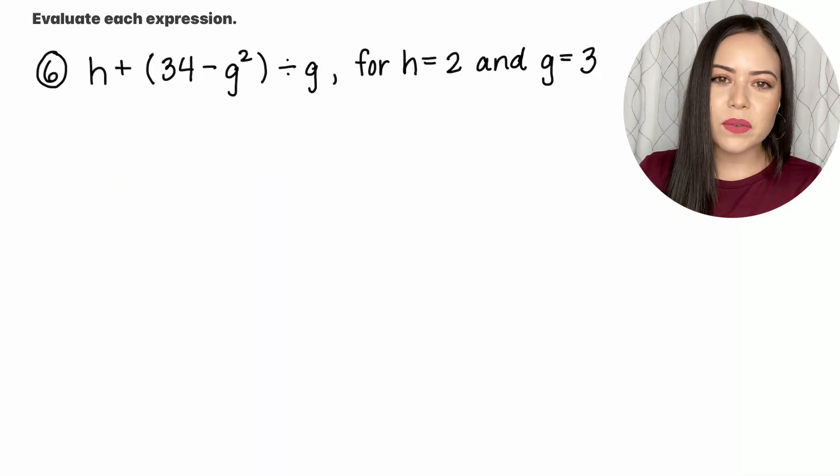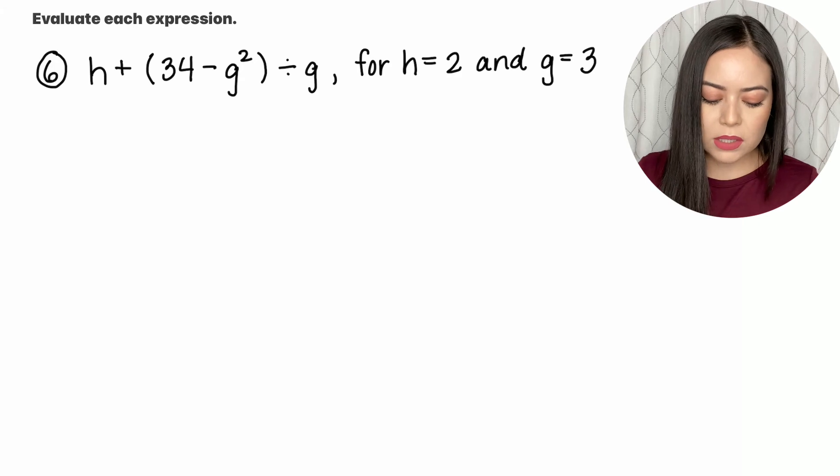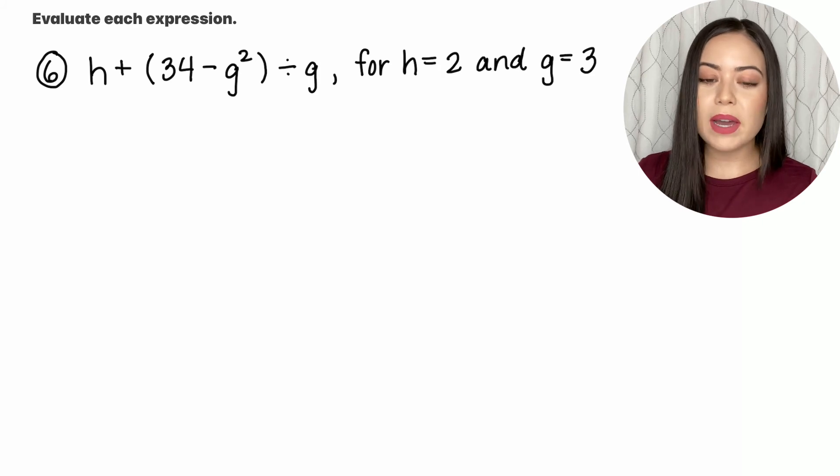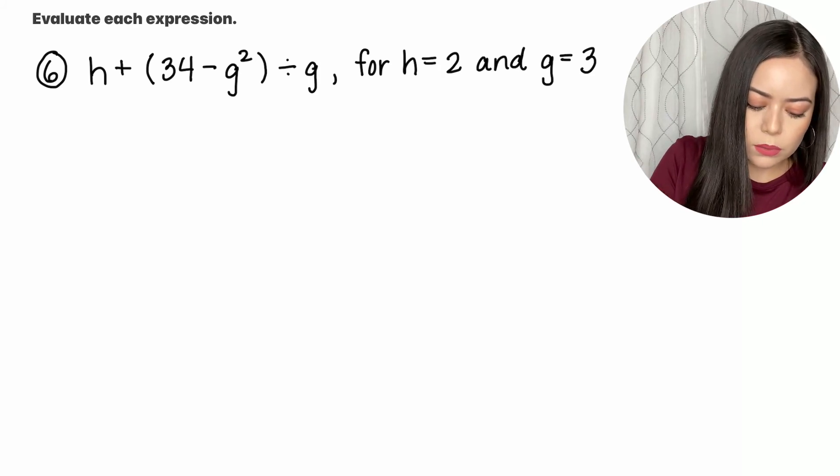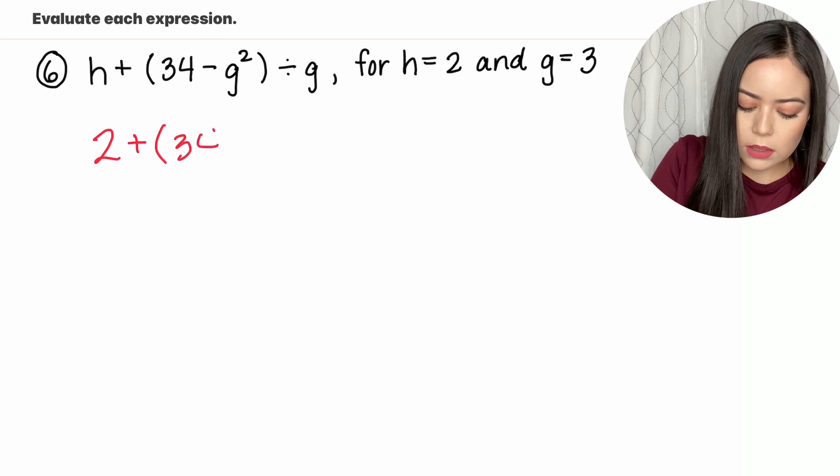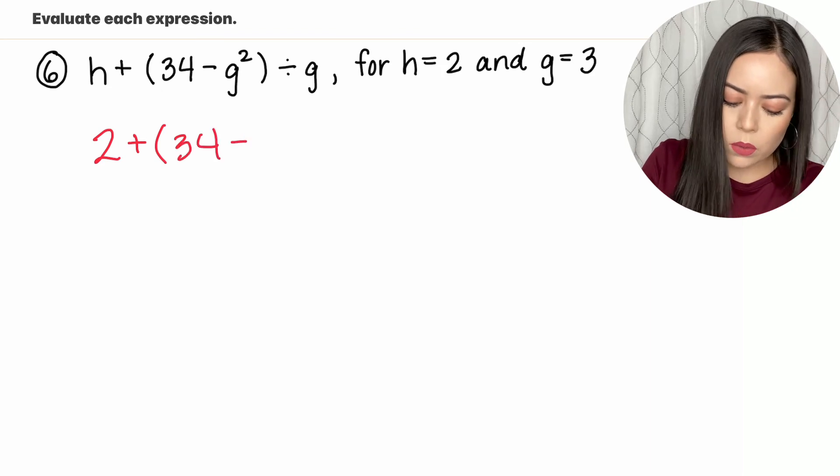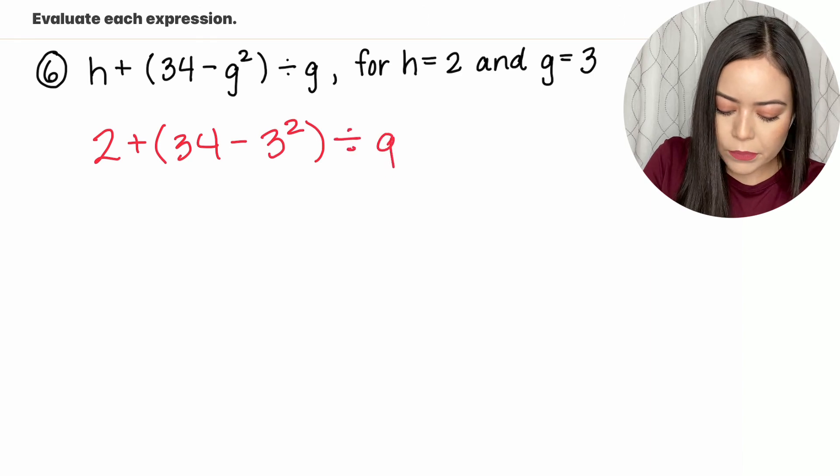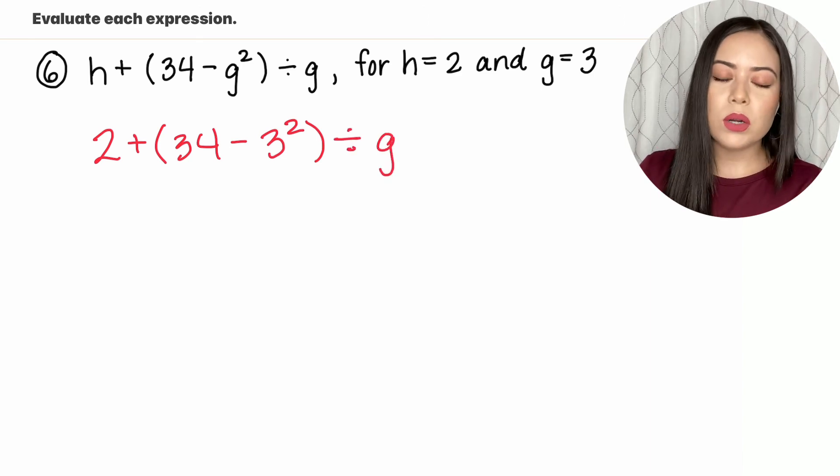Here is the very last question of this video. We have h plus the difference of 34 and g squared divided by g. And we're just going to be plugging in those values and then we're going to simplify as we go. h is 2 plus 34 minus g squared or 3 squared divided by g.